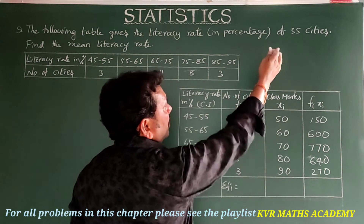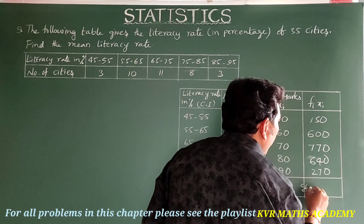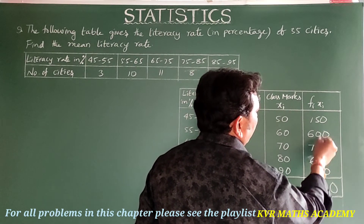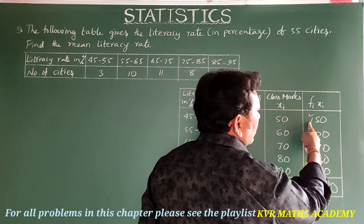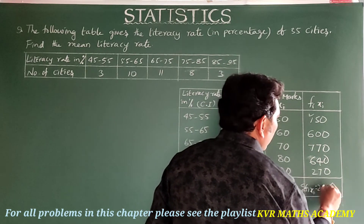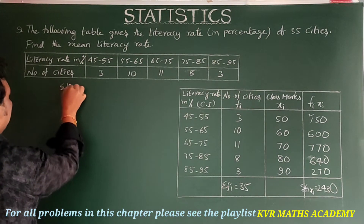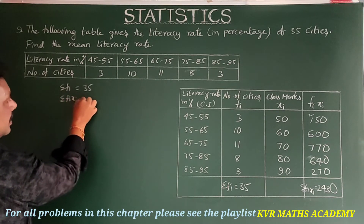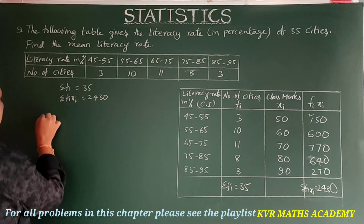Σfi·xi: adding 150 + 600 + 770 + 640 + 270 gives us 2430. So Σfi = 35 and Σfi·xi = 2430.